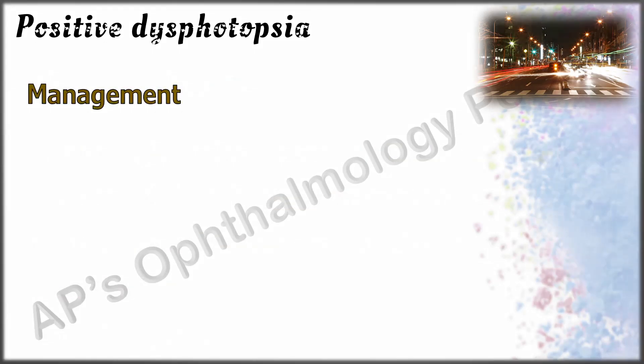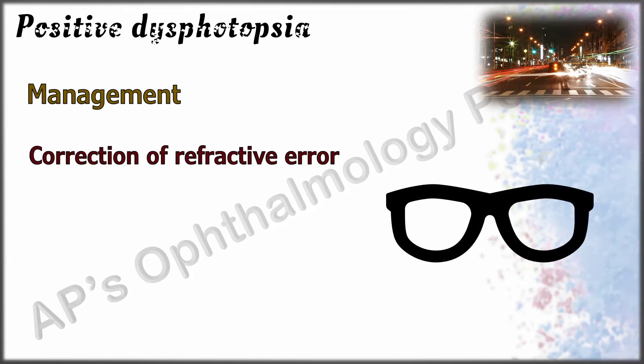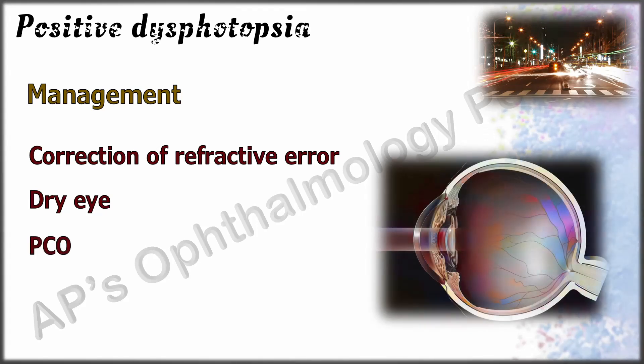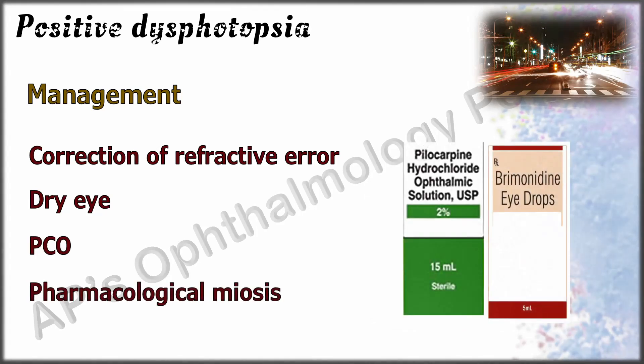Conservative treatment methods for positive dysphotopsia include taking care of conditions that can exacerbate dysphotopsia, such as correction of any refractive error, treatment of any coexisting ocular surface disease, treatment of posterior capsular opacification, and pharmacological miosis with either brimonidine or pilocarpine.